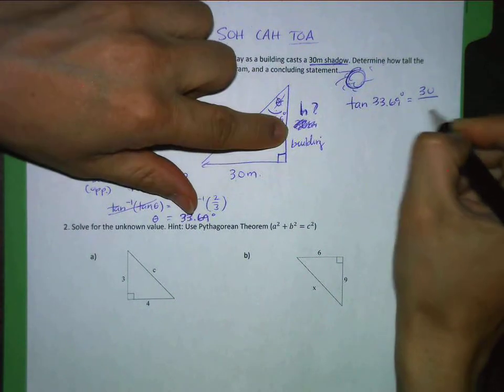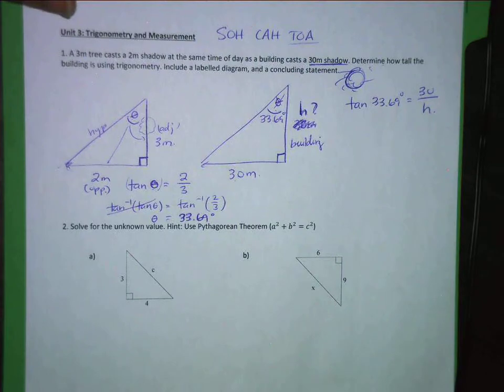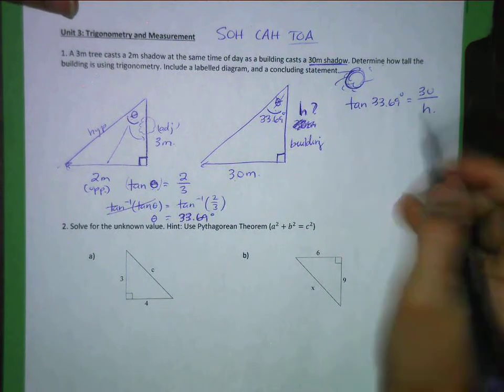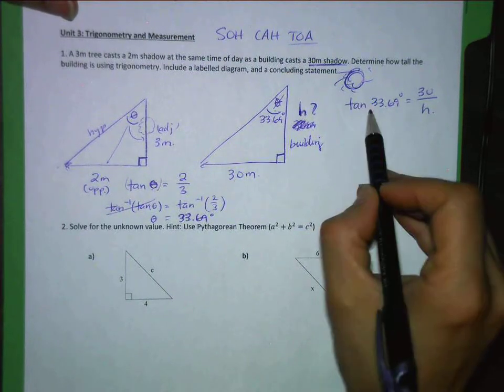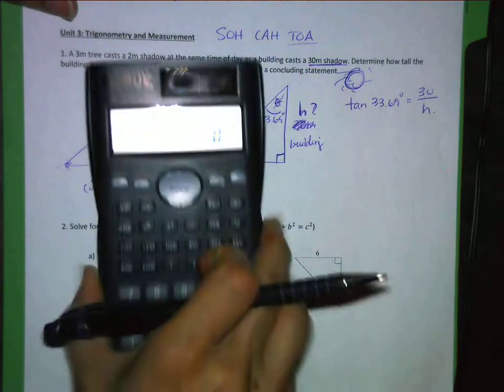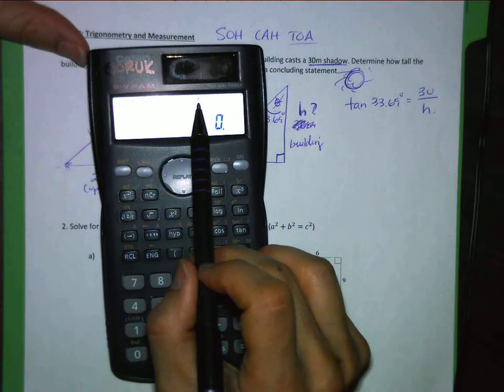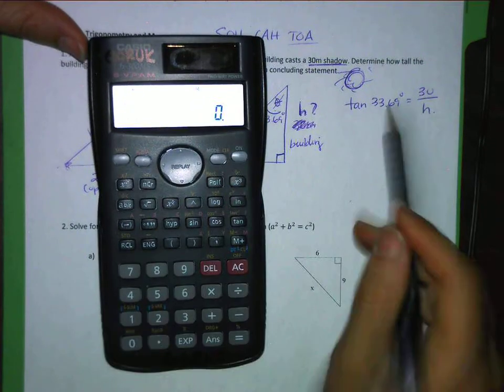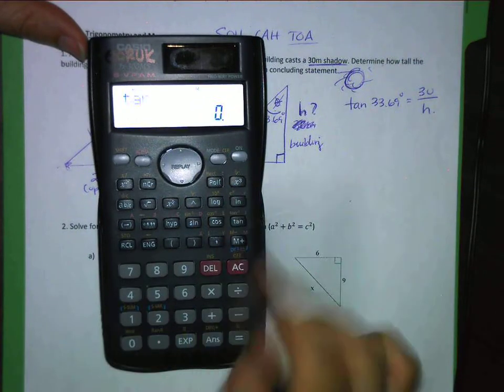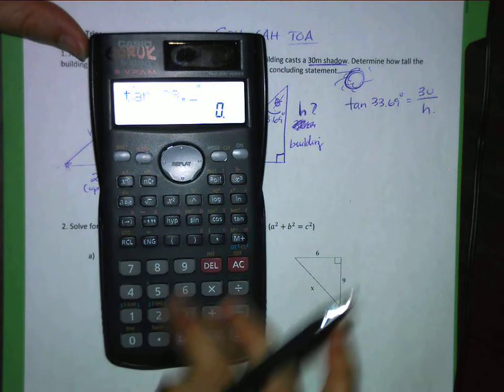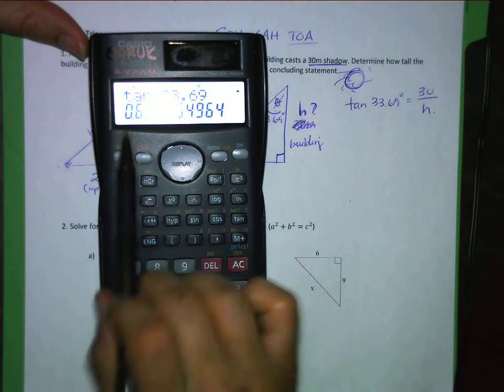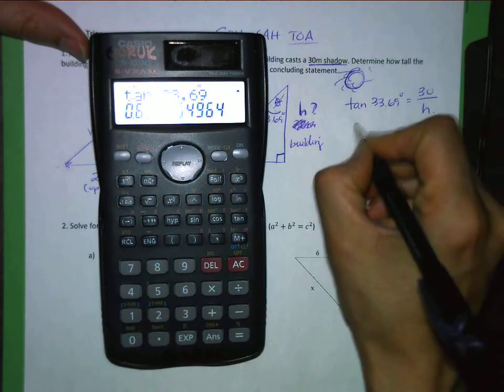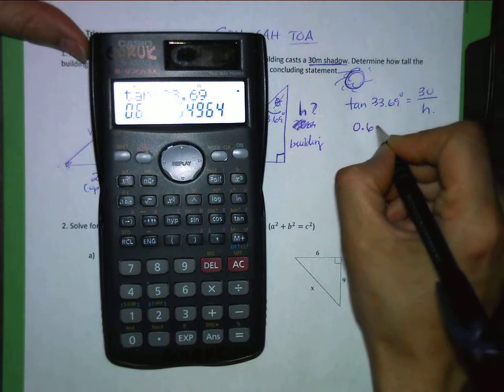So tan of 33.69 is equal to opposite over adjacent. So if you have to, you can make your life easier. You can figure out what this number is. Again, make sure your calculator is in degrees. There should be a little D there. You can see it. Now to take the tan of this, you just hit, or tangent. Tan 33.69 and hit equals and you get a really long number. So I'm going to write down four of those digits. And they're all sixes. That equals 30 over H.